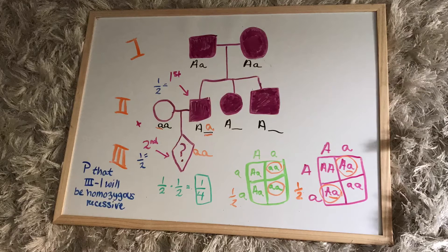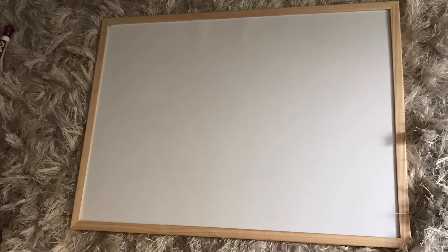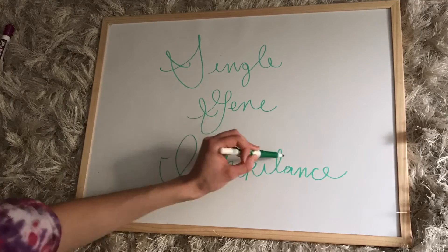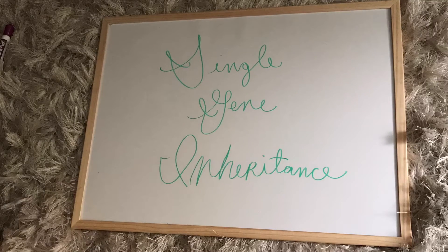If this problem had a gender involved, you would just multiply the one-fourth by one-half to get one-eighth. So that's a little bit about single gene inheritance. Make sure to stay tuned for sex linkage and other genetic problems.